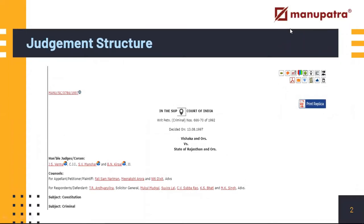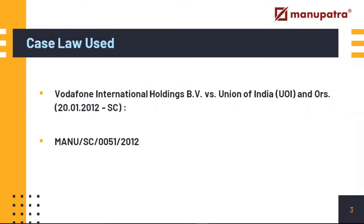Simply double-click on any word and you will be able to find a dictionary meaning. The idea is that we want to provide our users easy-to-navigate tools so they don't have to think much — the system does the heavy lifting for them. For this demo, we'll be using Vodafone International Holding BV versus Union of India, 2012.